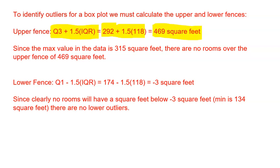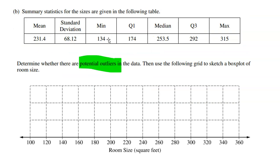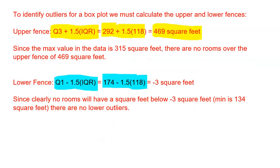Now, the max of the data, according to our summary statistics, is 315 square feet. So obviously, there's no data at all higher than 469 because the highest value we have is 315. So that means there's no larger outliers on that high side. So there's no rooms over that value. So no outliers on the high end. The lower fence is Q1 minus 1.5 times that IQR. Again, IQR is Q3 minus Q1. We got that to be the 118. So I took Q1, 174 minus 1.5 times the IQR. And I got negative three square feet. Obviously, you can't have any rooms that have a square feet less than zero. So that doesn't even make sense. And then furthermore, my min was 134 square feet. Again, that was given to me in the summary statistics. So obviously, if the min is 134, there's clearly not going to be any rooms less than negative three. So there's no lower outliers as well.